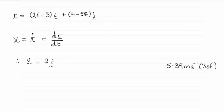And then if you differentiate the minus 5t here, remember the constants, by the way, go to zero. But if you differentiate minus 5t, that's going to give you minus 5 in the j direction.